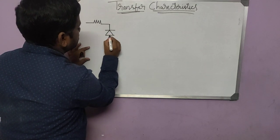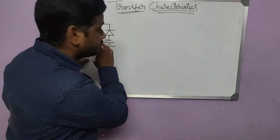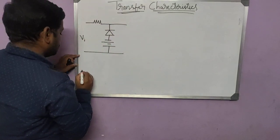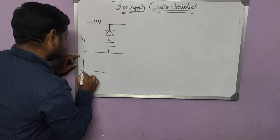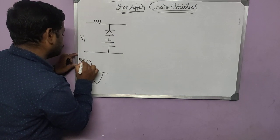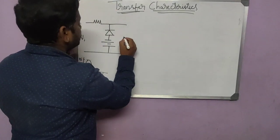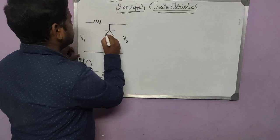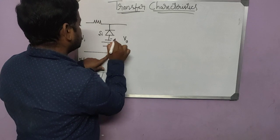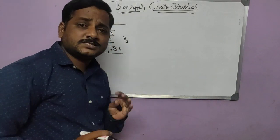Let me consider a diode circuit. This is the reference voltage, and here I will plot the input — say the input is a sine waveform of 15 volts, so it goes from minus 15 to plus 15 volts. You need to find what is the output. This is a silicon diode, so assume the reference voltage is plus 3 volts.